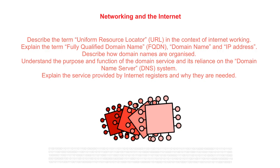In this video, we're going to look at a number of concepts that help explain how part of the internet works, and more specifically, how the World Wide Web works. We'll be describing what the URL is, explaining the term fully qualified domain name, domain name, and IP address. We're going to describe how domain names are organised, understand the purpose and function of the domain name service and its reliance on domain name servers, and explain the service provided by internet registers and why they're needed.